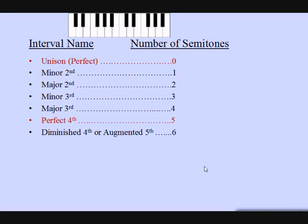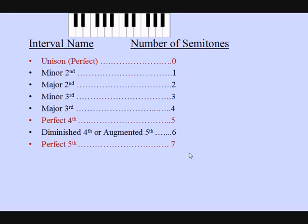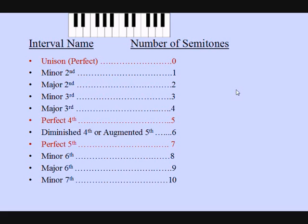If we count the distance between D and A, we get one, two, three, four, five, six, seven semitones. That allows us to say that between D and A there is a perfect fifth. Adding one semitone at a time from there gives us the minor sixth, the major sixth, the minor seventh, and finally the octave.